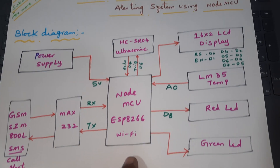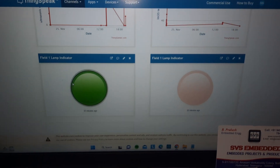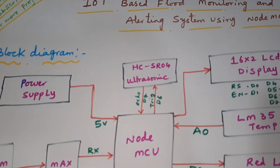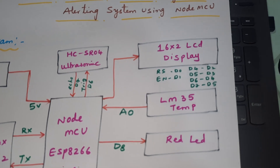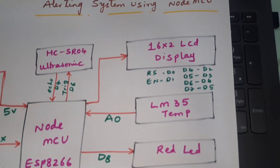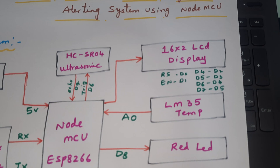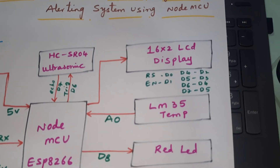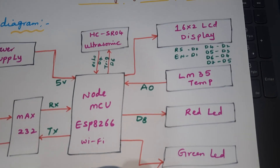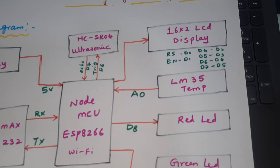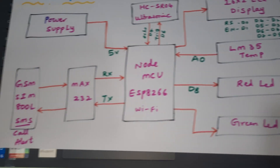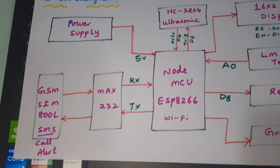The components are: power supply, NodeMCU ESP8266, ultrasonic sensor HC-SR04, 16x2 LCD display connected via RS, EN, D4, D5, D6, D7, and NodeMCU pins D0 through D5. Also LM35 temperature sensor connected to A0, red LED, green LED alert, and MAX232.